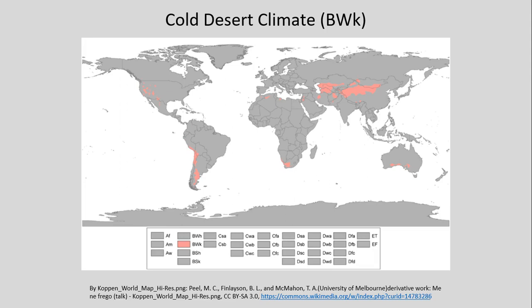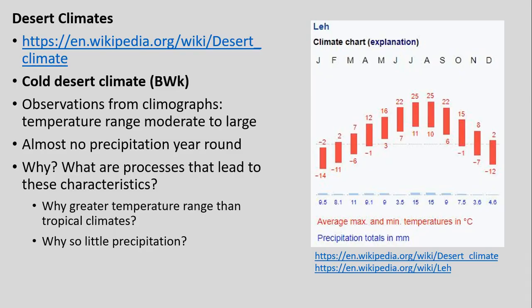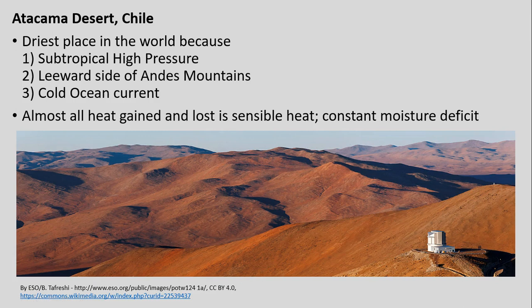In cold desert climates, we still have some impact from high pressure cells seasonally. We're seeing quite a large range of temperature — a large swing within any given month — and also a greater variation of temperature throughout the year as the sun angle varies more. Again, not much precipitation, due not only to high pressure but also other factors we've discussed.